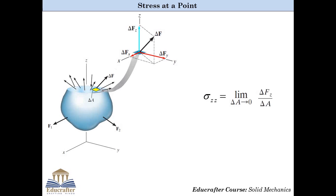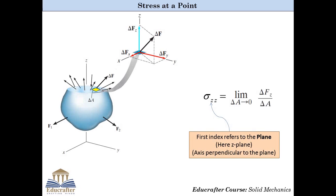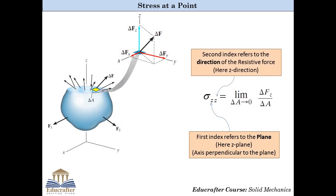This convergence is only observed when the number of partitions tends to infinity, meaning the area element becomes smaller and smaller and delta A tends to zero. So sigma Zz is defined as the limit of delta Fz divided by delta A as delta A tends to zero. The first index refers to the plane on which the resistive force acts — here the first index is Z, as the elemental area on which delta Fz acts is perpendicular to the Z axis. The second index refers to the direction along which the resistive force acts — here the second index is Z, as the direction of delta Fz is along the Z axis.